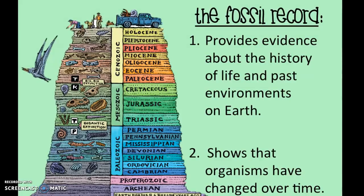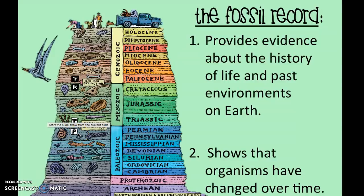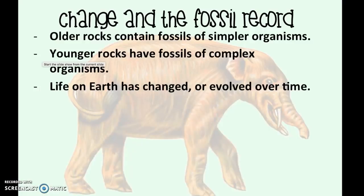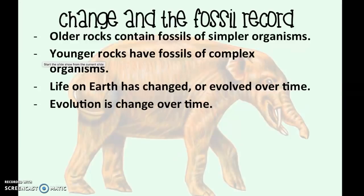The fossil record provides information about the history of organisms and the environments in which they lived. Fish fossils indicate an aquatic environment. The fossil record also shows how organisms have changed over time — how things have evolved. Older rocks contain fossils of simpler organisms like bacteria, while younger rocks contain fossils of more complex organisms like vertebrates and mammoths, indicating that life on Earth has changed and evolved over time.